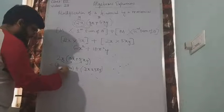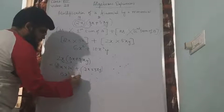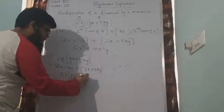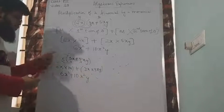2 times 3 is 6, x into x is x square, plus 2 times 5 is 10, x into x is x square, y is remaining write as it is. So this one is going to be your answer.